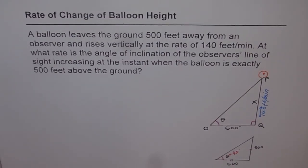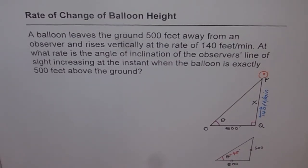Rate of change of balloon height. A balloon leaves the ground 500 feet away from an observer and rises vertically at the rate of 140 feet per minute. At what rate is the angle of inclination of the observer's line of sight increasing at the instant when the balloon is exactly 500 feet above the ground?